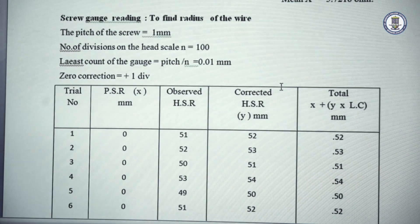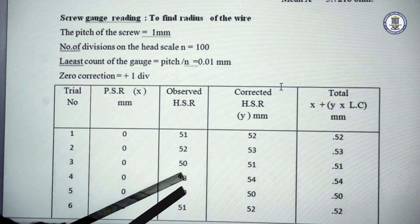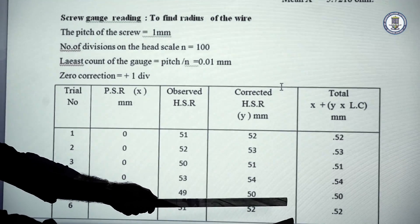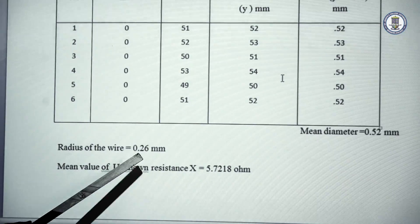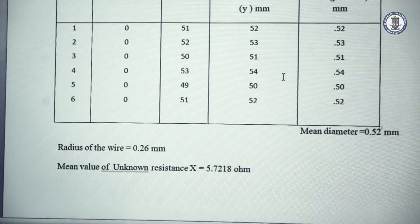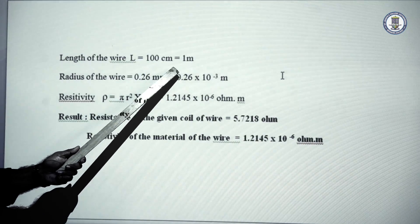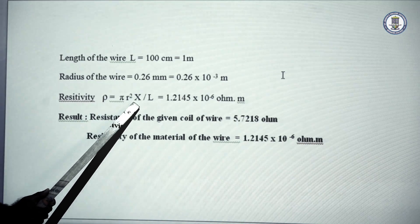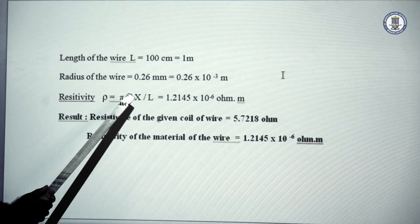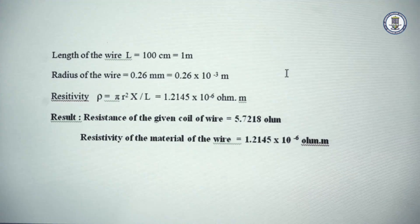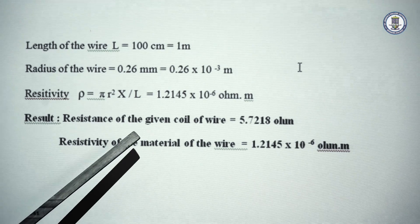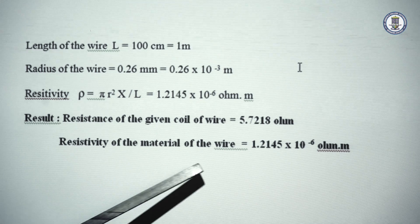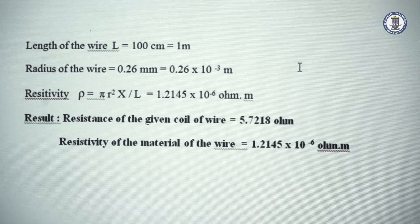Using a screw gauge, the diameter of the wire is determined. The corrected mean diameter is 0.52 millimeters, giving a radius of 0.26 millimeters. With the value of x as 5.7218 ohms and the wire length of 100 centimeters (1 meter), the resistivity rho is calculated as pi r squared times x by L, giving rho equal to 1.2145 into 10 to the power of minus 6 ohm-meter. Therefore, the resistance of the given wire is 5.7218 ohms and the resistivity is 1.2145 × 10⁻⁶ ohm-meter.